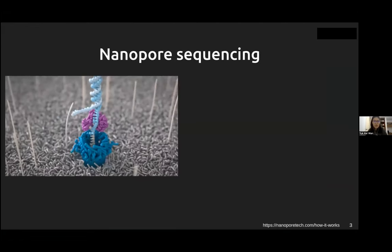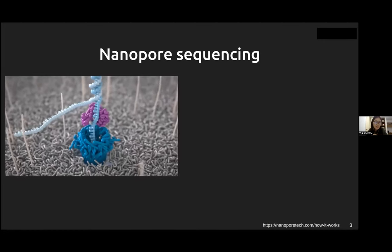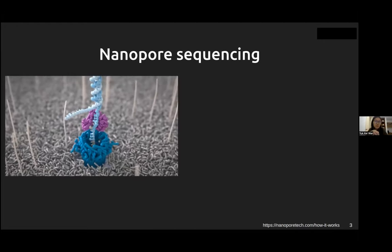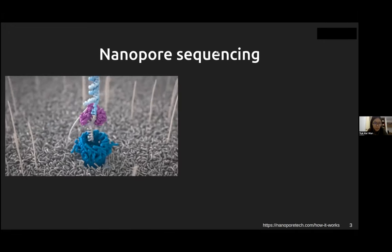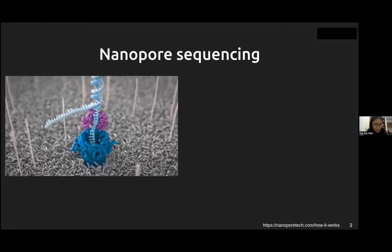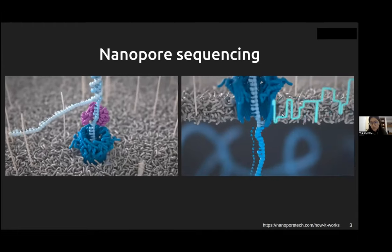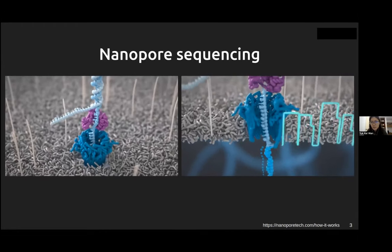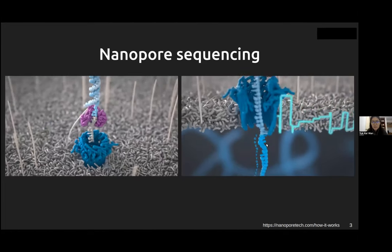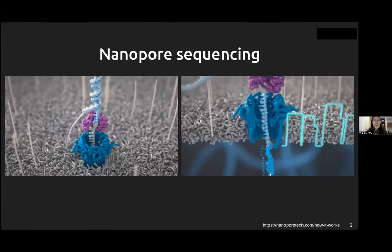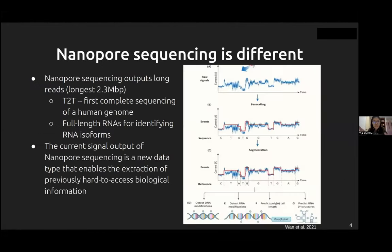Nanopore sequencing is a sequencing technology provided by Oxford Nanopore Technologies. Here you see a string of nucleic acid going through a pore — this is called the nanopore. As it passes through the pore, current signals are emitted. These current signals can be translated into specific nucleotide bases. Nanopore sequencing is one of the third-generation sequencing technologies and it outputs long reads.